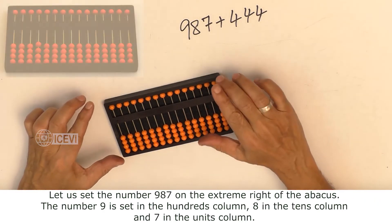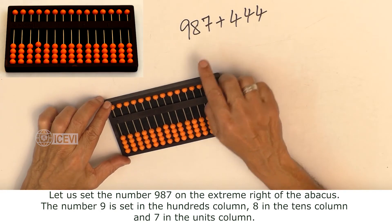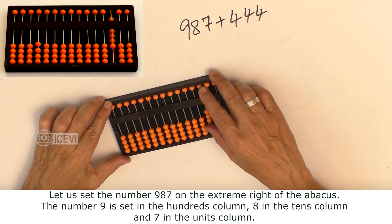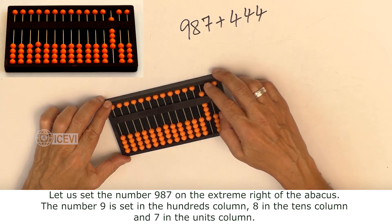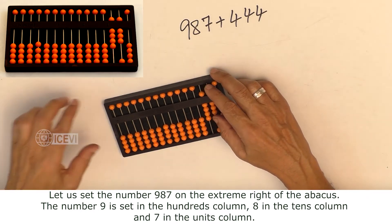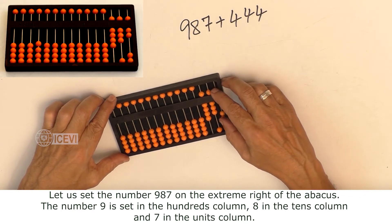Let us set the number 987 on the extreme right of the abacus. The number 9 is set in the hundreds column, 8 in the tens column, and 7 in the units column.